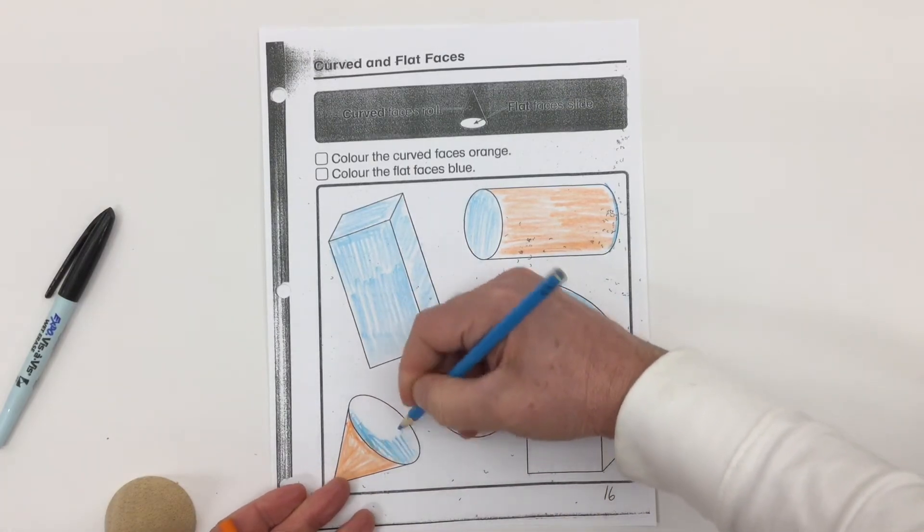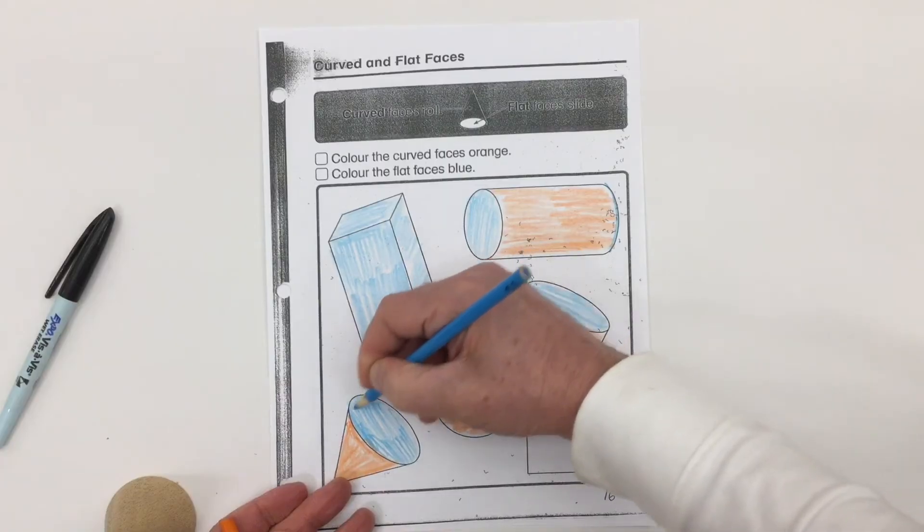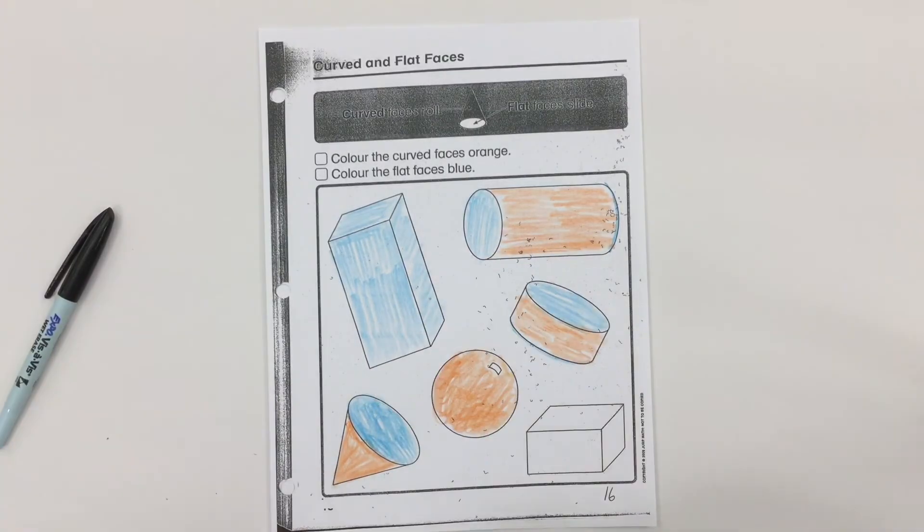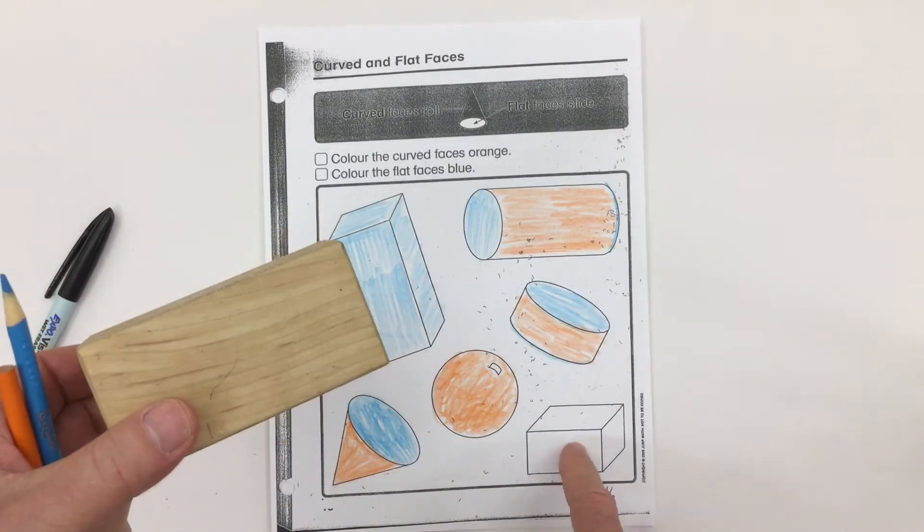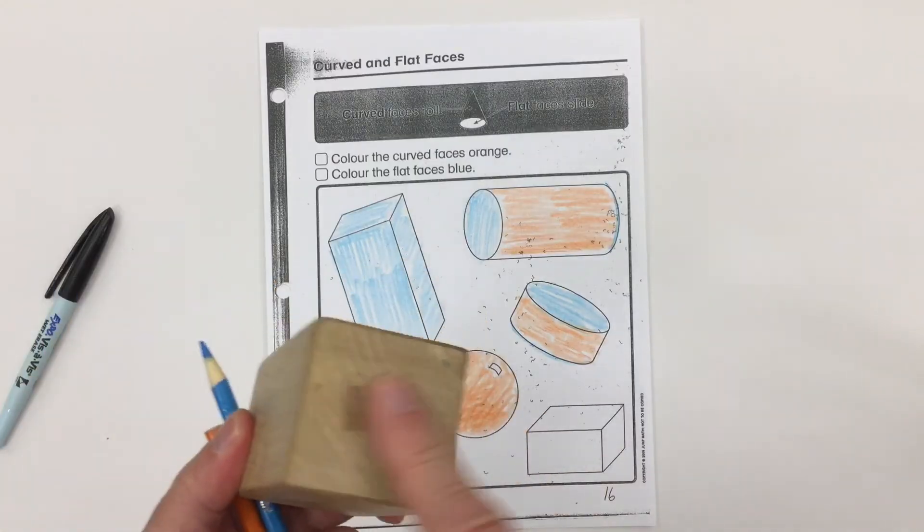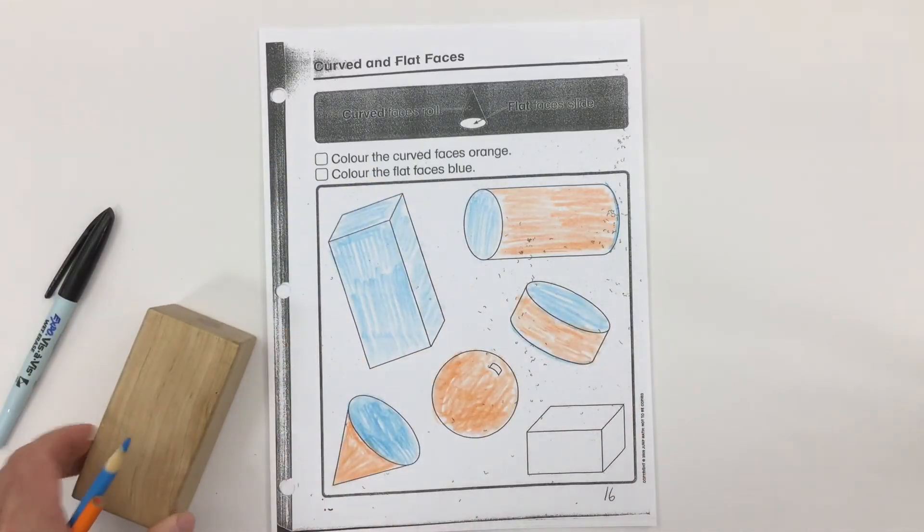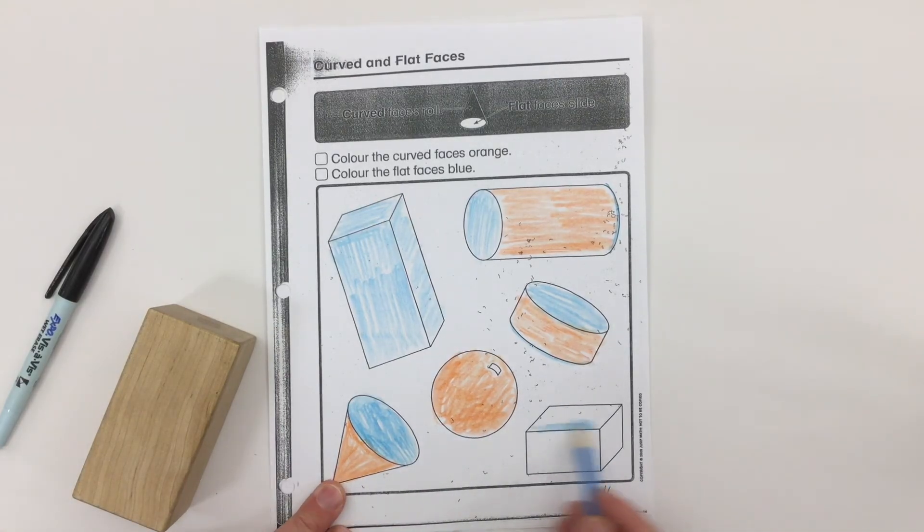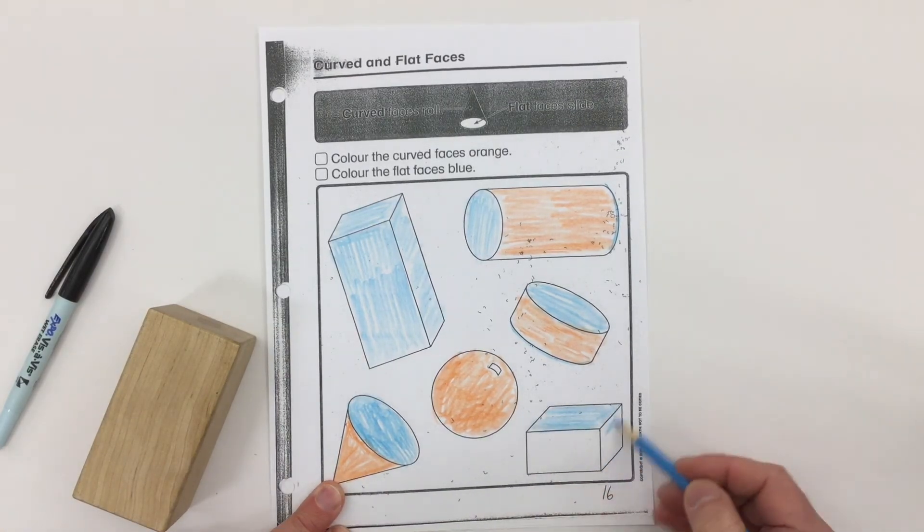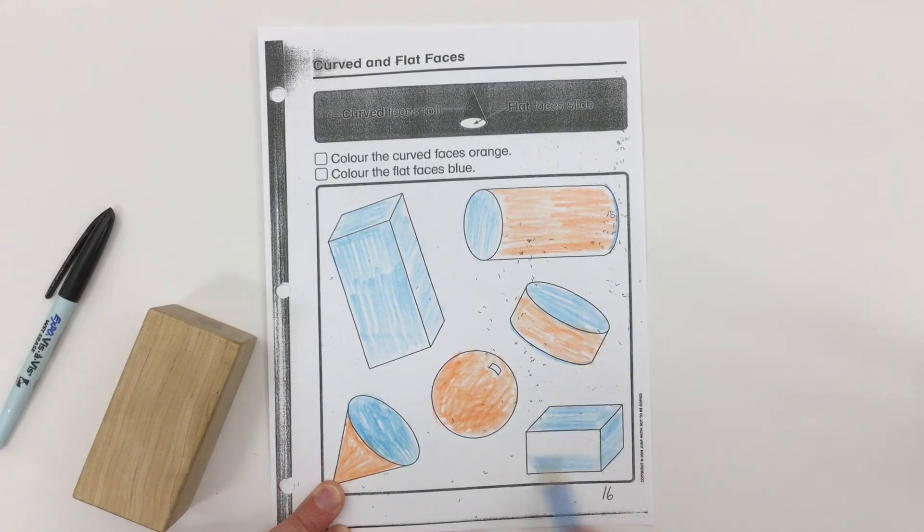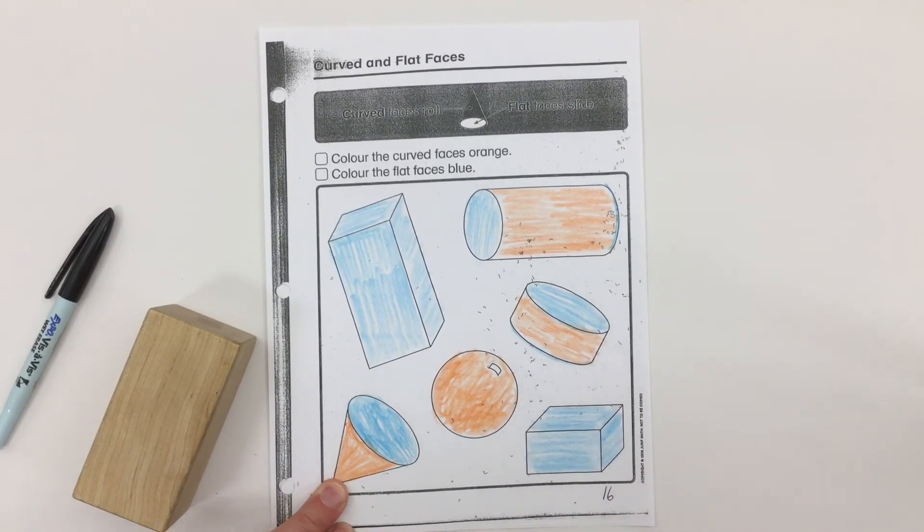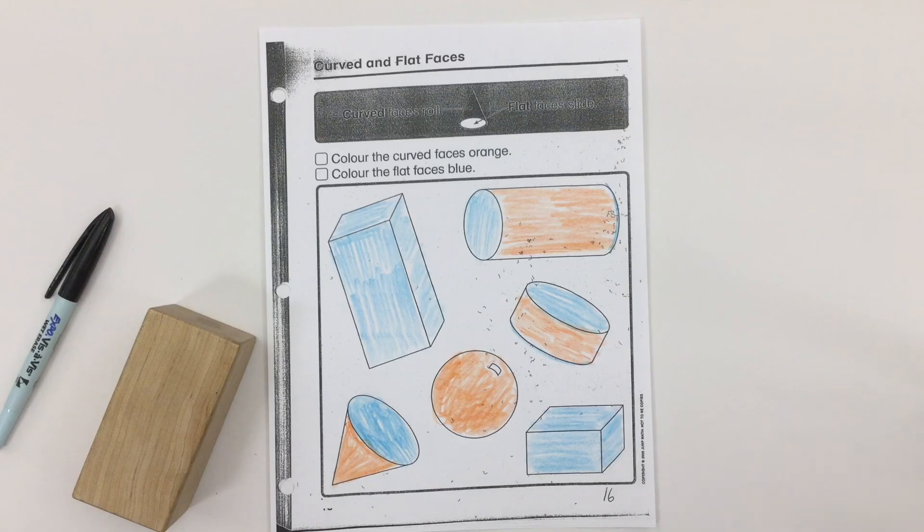This last one we have another rectangular prism. Again, all the faces are flat, so everything here is going to get colored blue. Curved and flat faces.